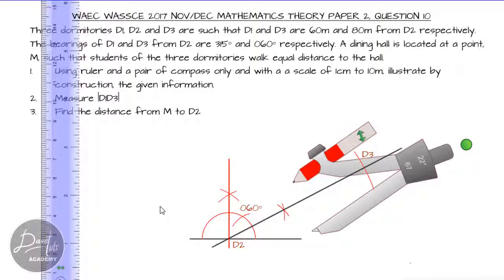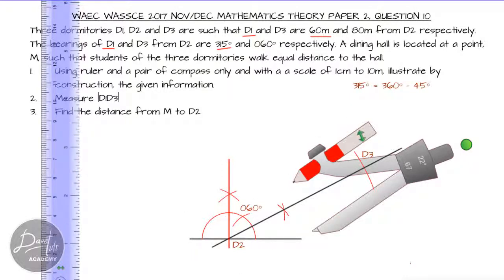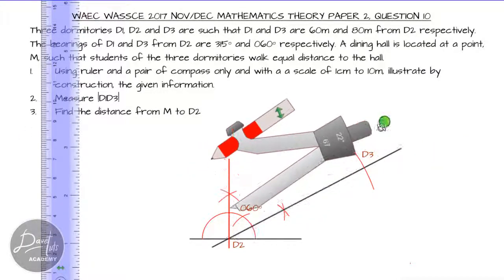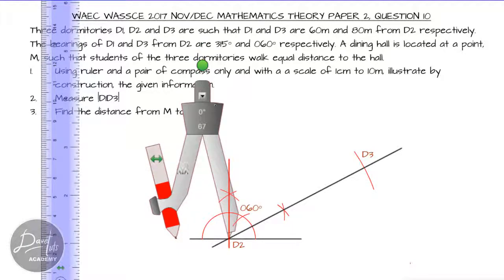Now we locate dormitory D1, which is 60 meters away on a bearing of 315 degrees. 315 was found as 360 minus 45, so 45 degrees to the left of north gives our 315. All we need to do is bisect the angle 90 degrees to the left of our north — bisecting 90 gives 45. So we construct 45 degrees to the left of D2, giving us the direction to D1.